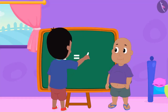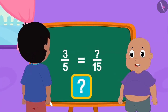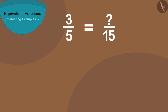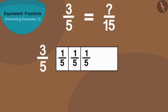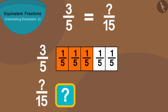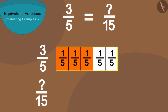This is Raju's next fraction. Children, can you find this fraction? Let's find it using a different shape. We can show this fraction by dividing a strip into five equal parts and coloring three parts. Now, how many parts are there in its equivalent fraction? Fifteen.